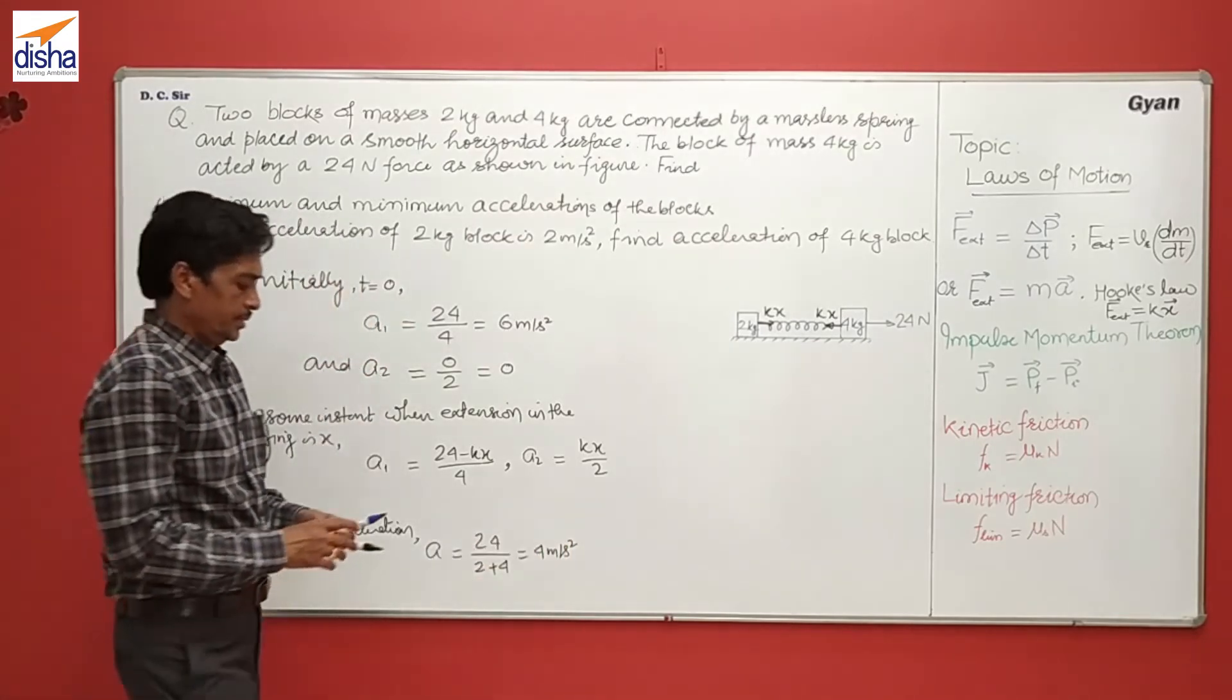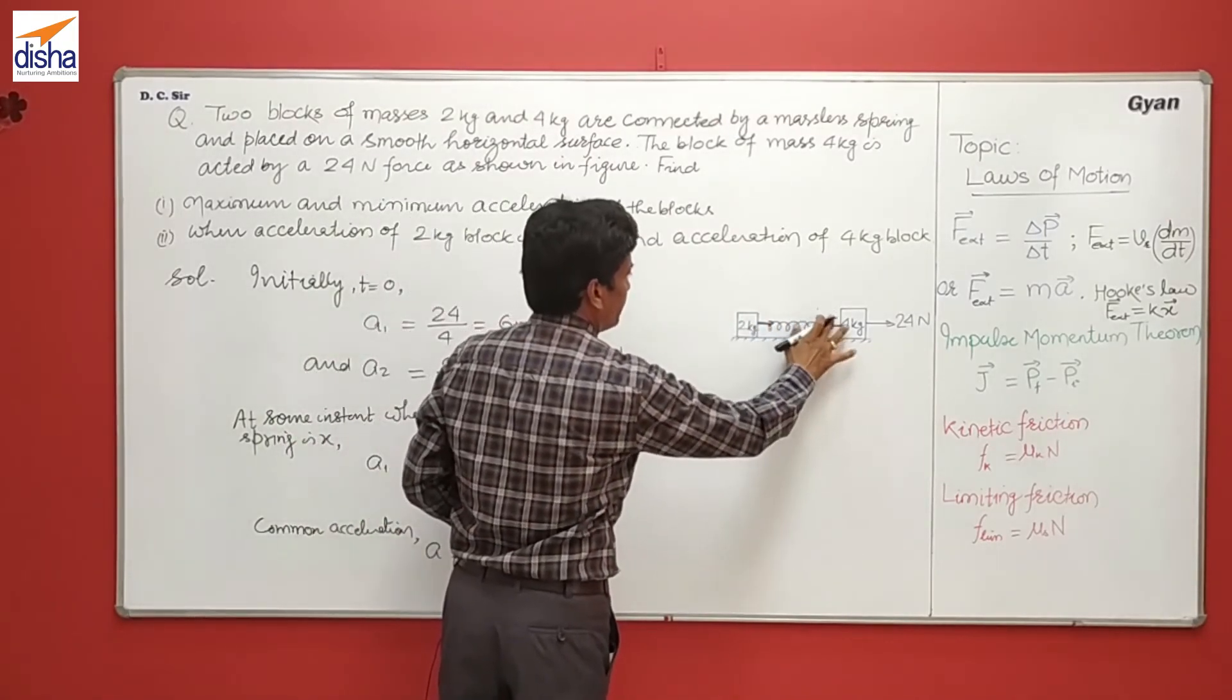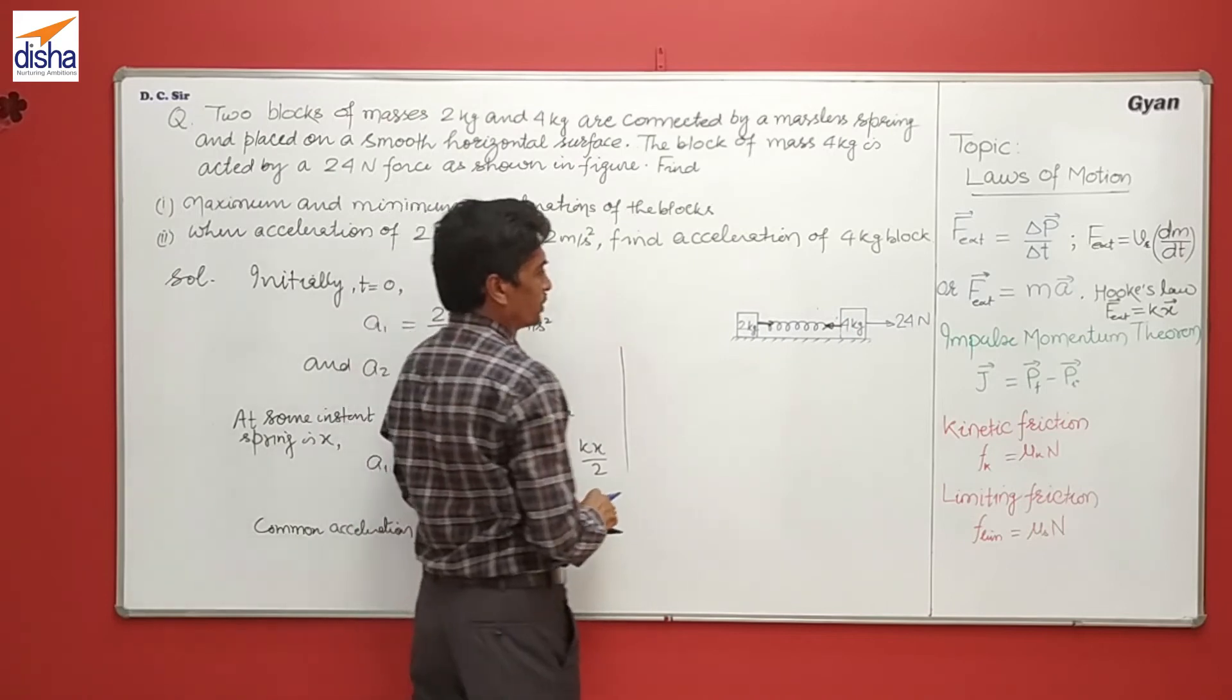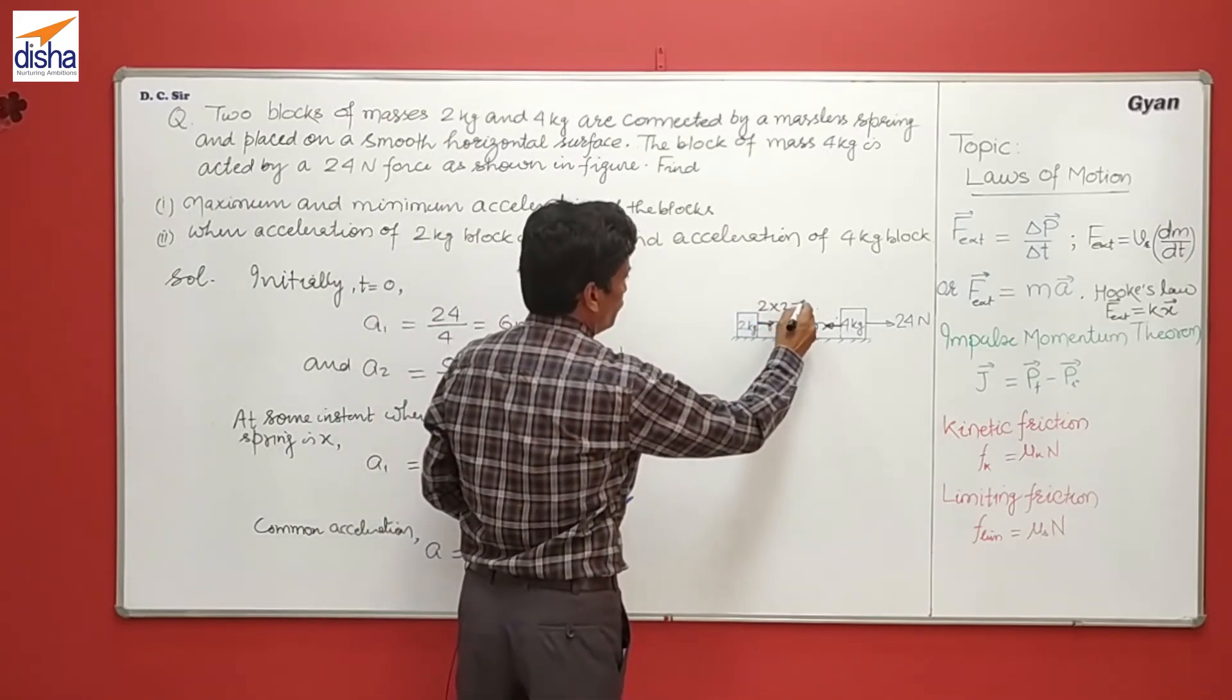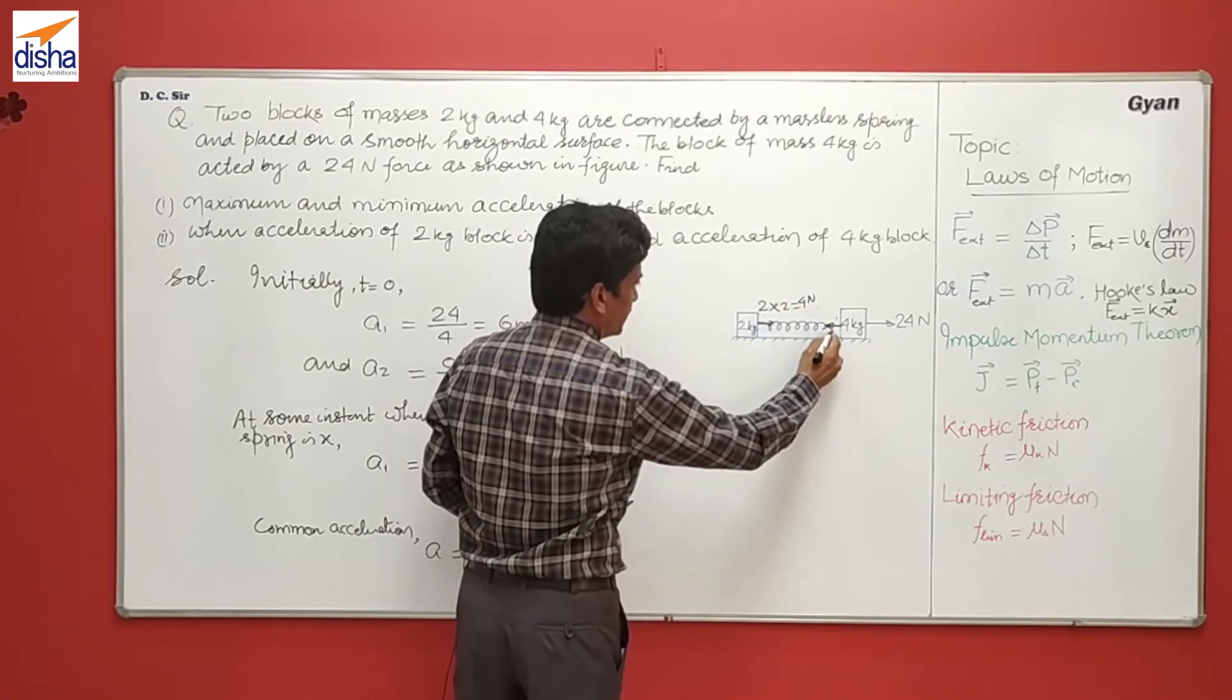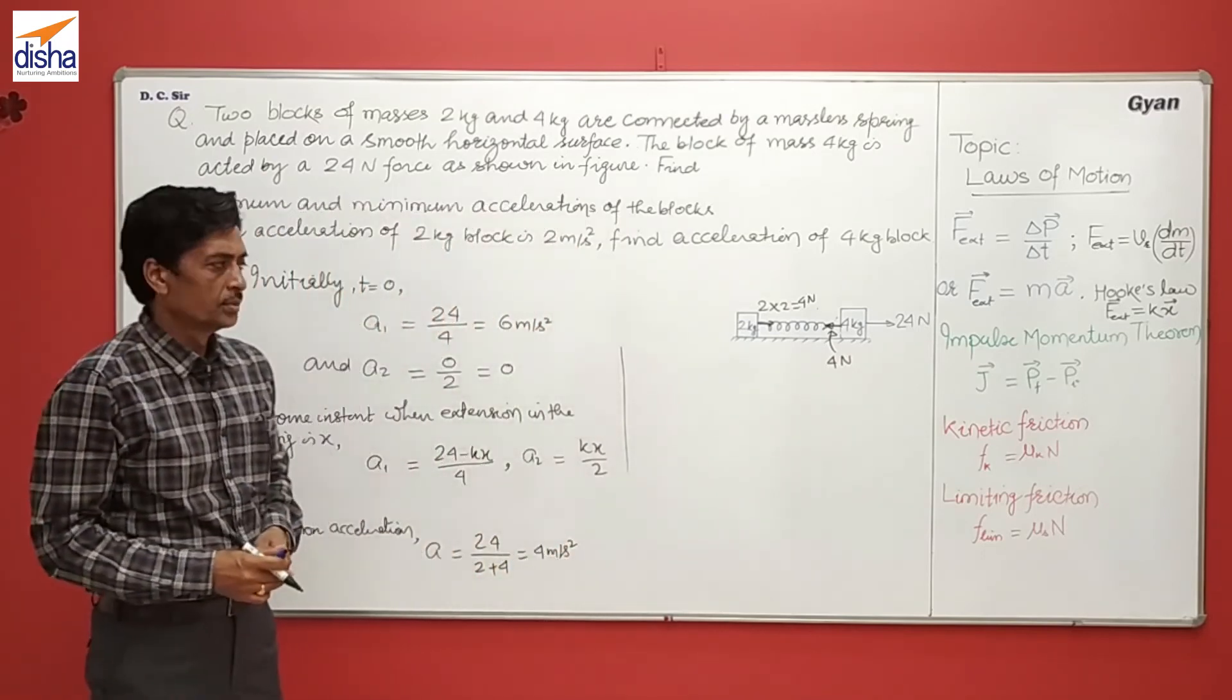Now when the acceleration of 2 kg is 2 meter per second squared, it has the force towards right equals to 2 into 2, that equals 4 N. The same force in opposite direction of 4 N acts on the 4 kg block.